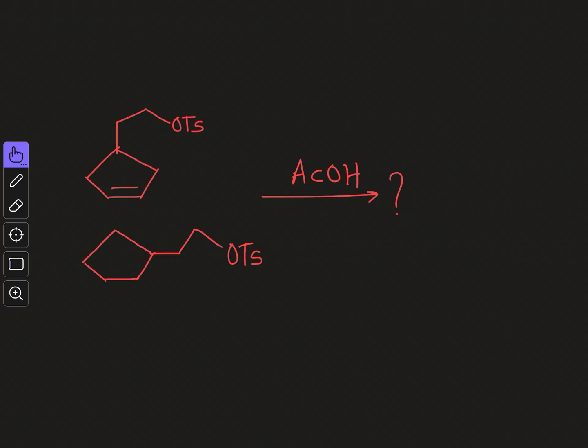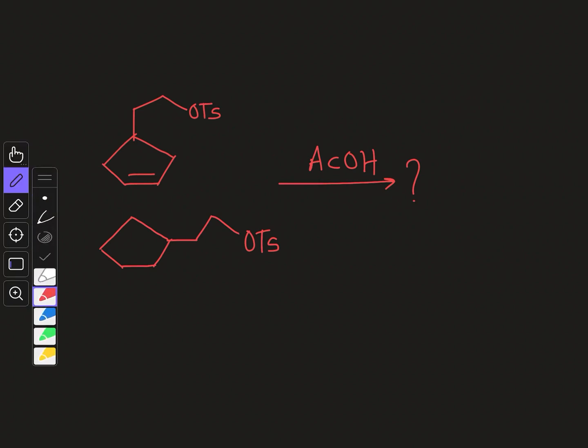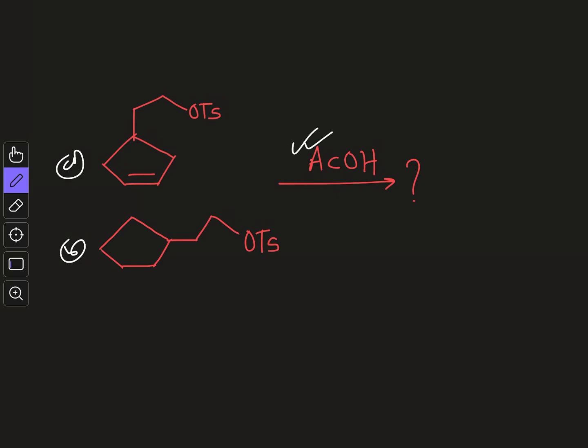Welcome to Chemistry Lover. In this video we are going to discuss questions on solvolysis reactions. Several questions may be formed out of these two particular substrates — compound A and compound B. We are performing the solvolysis reaction in acetic acid solvent. The first question is: what is the rate difference between A and B, which one will react faster? The second question is: what will be the product of these two reactions?